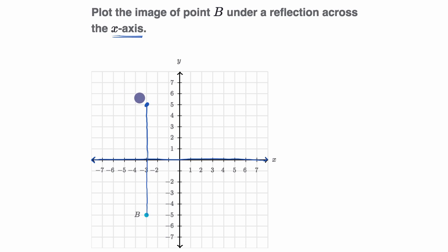So that's where the image would be. Maybe we could denote that with a B prime. We are reflecting across the x-axis.